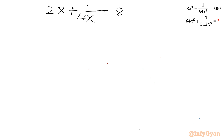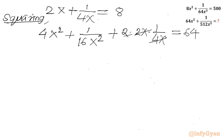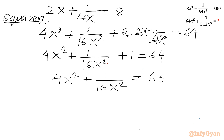Now I will square both sides of this equation. Squaring gives 4x² + 1/(16x²) + 2 × 2x × 1/(4x) = 64. We can cancel the cross term: 4x² + 1/(16x²) + 1 = 64, so 4x² + 1/(16x²) = 63. This will be equation number 2.